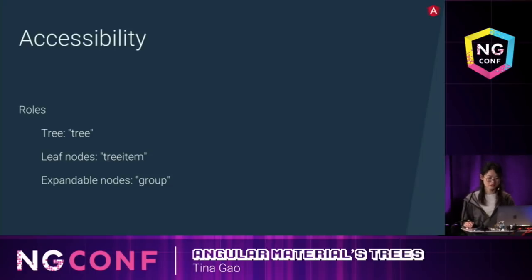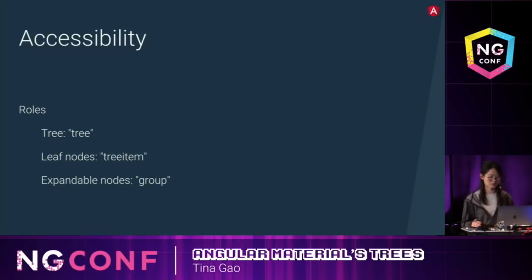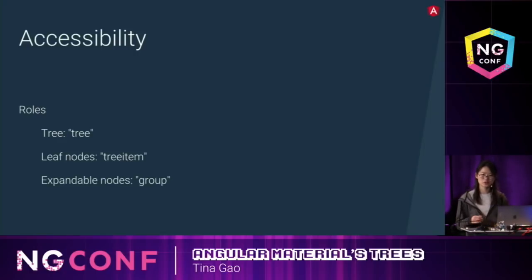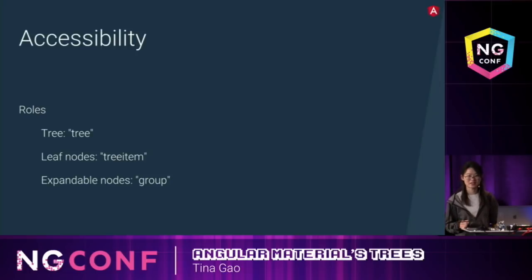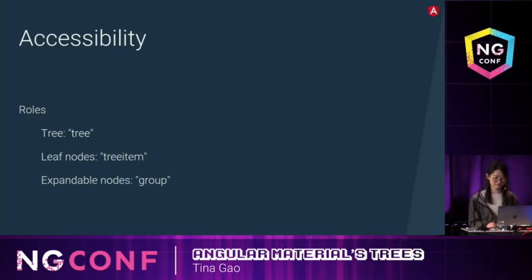For accessibility, the tree has a role of tree. Each node can have a role of tree item or group, based on whether the node is expandable or whether the node has children.